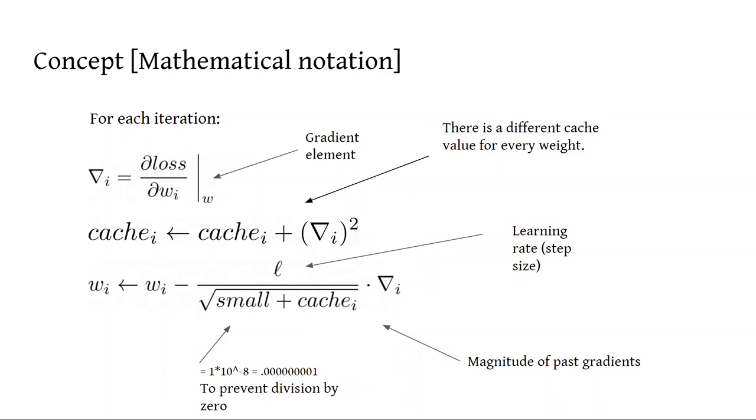This essentially just tells you the slope, and this was visually demonstrated in one of the previous slides. The next step is to assign a cache value to every parameter, and the reason we do this is because every parameter, when using learning rate-based optimizers, they all have their own learning rate associated with them, rather than a single universal learning rate.